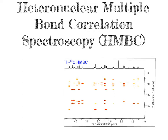Now we are going to take this a step further and look at heteronuclear multiple bond correlation spectroscopy. This is a really valuable tool for piecing together the atoms and connections that make up organic molecules, because it is going to tell us which hydrogens are separated by about two to four bonds from which carbon atoms. The HMBC experiment is going to indicate protons that are separated by typically two to four bonds from carbon atoms.